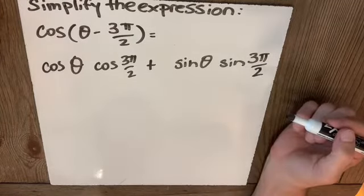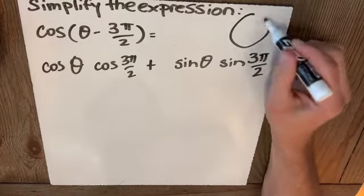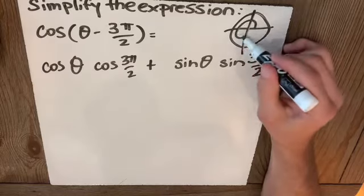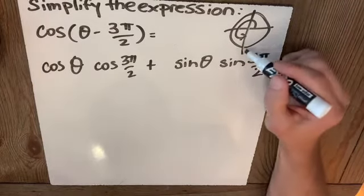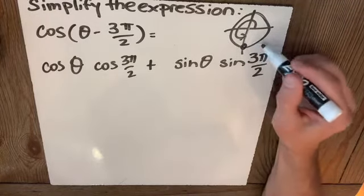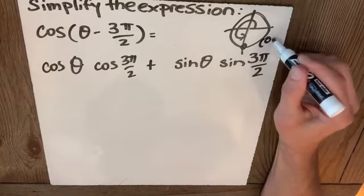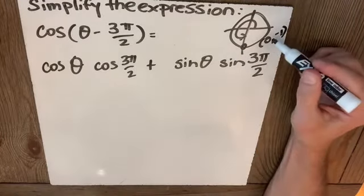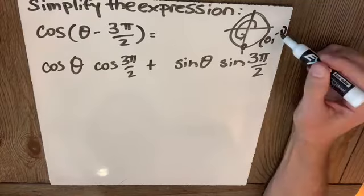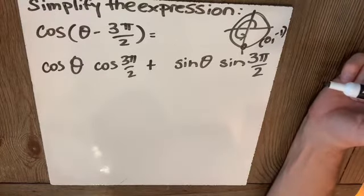And I have to know something about, not part of my proof, but I have to know something about what's going on at 3π/2. If that's my angle, 3π/2, I'm here at 0 for x and y is -1. Oh yeah, that's cosine 3π/2 is 0, sine 3π/2 is -1.